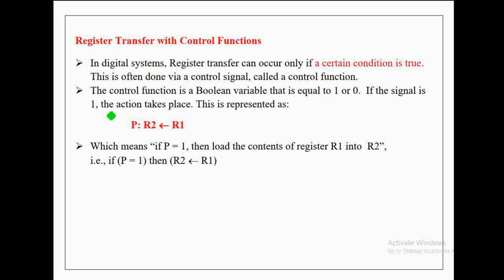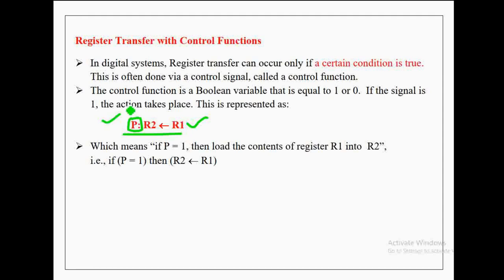If the control signal is 1, then the action takes place; otherwise it won't. For example, with control variable p, when p is true, the register transfer takes place — that is, binary information is transferred from register R1 to R2. This transfer can take place only when p equals 1.